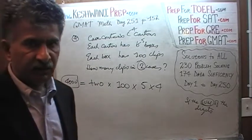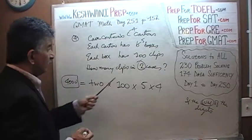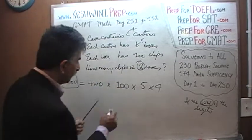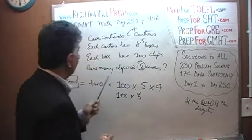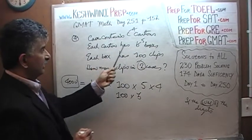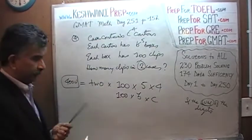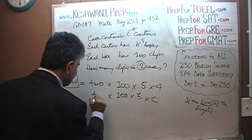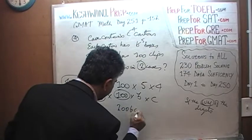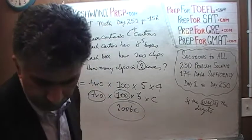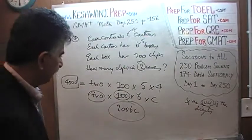Alternatively, doing it algebraically: each box has 100 clips, each carton has B boxes, each case has C cartons, and we have 2 cases. So the total is 2 times 100 times B times C, which equals 200BC. That is the answer, and it's answer choice C.